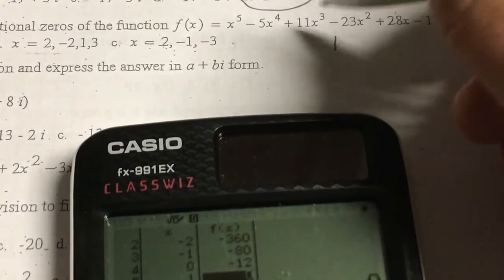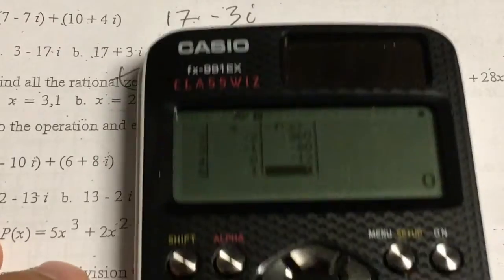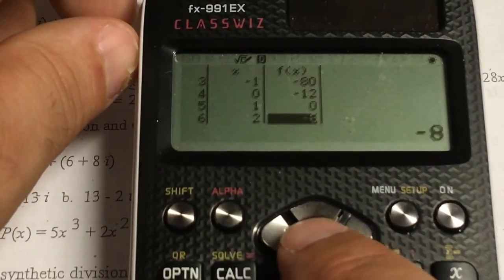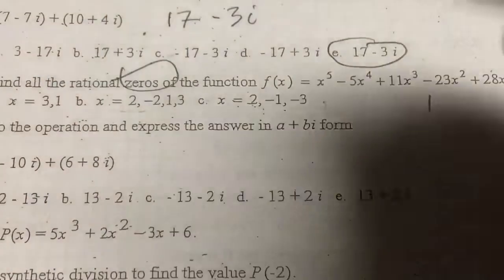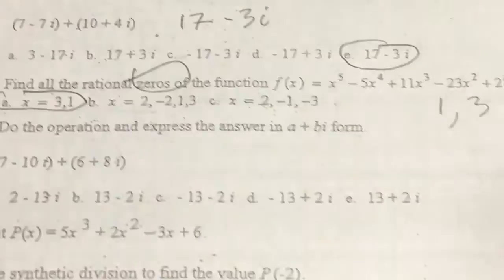And there's a zero at 1. So 1 is a zero. It says I'm looking for zeros and 1 is a zero. Scrolling down again. And 3 is a zero. So my answer is 1, 3, or 3, 1, which is choice A.